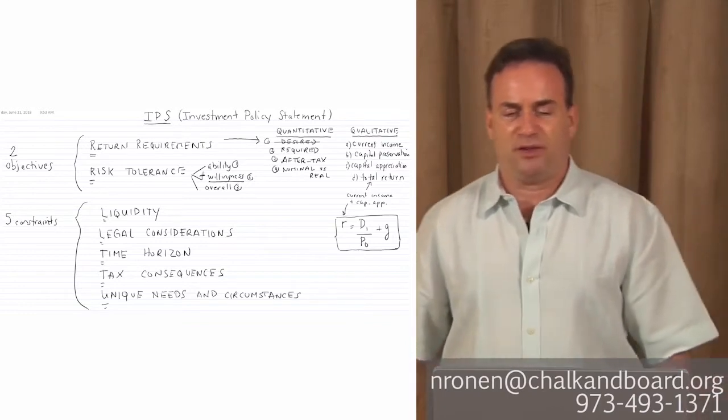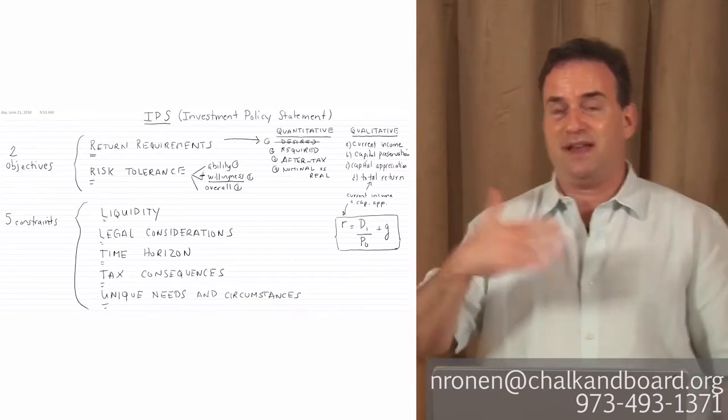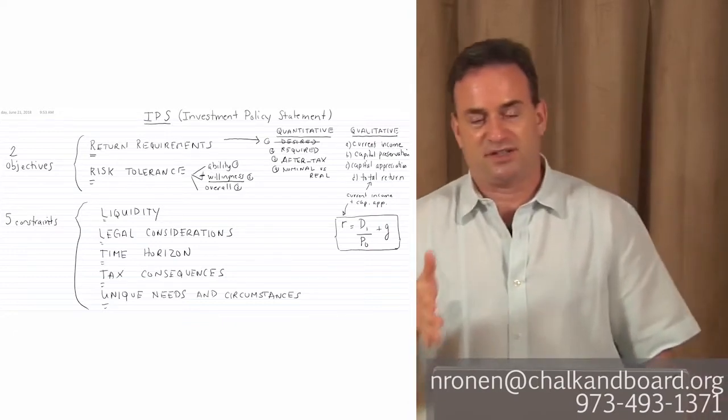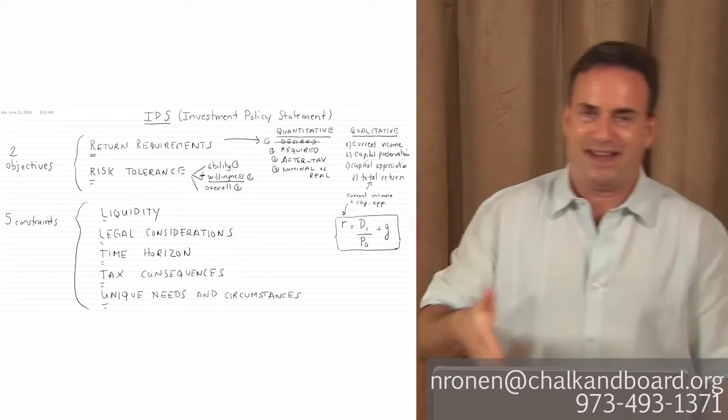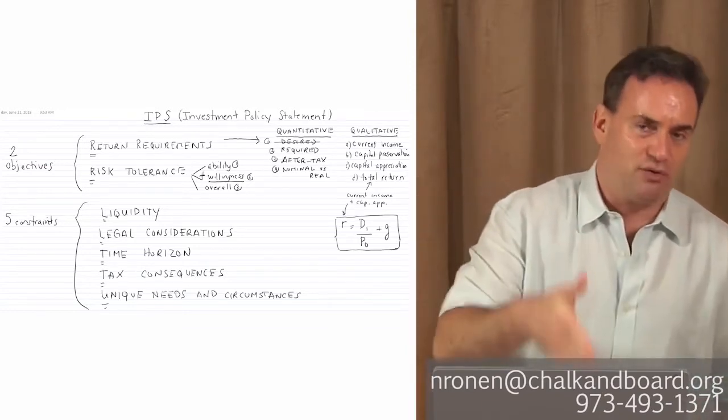When we talk about the objectives, let's talk about the return requirements and the risk tolerance. As I said before, they need to be in sync. Before we go over the return requirements and risk tolerance, what you should also keep in mind is that the IPS is gonna be very general, not very detailed.